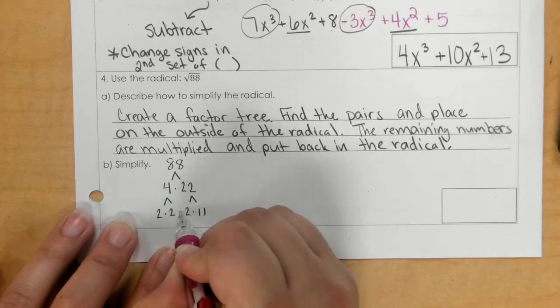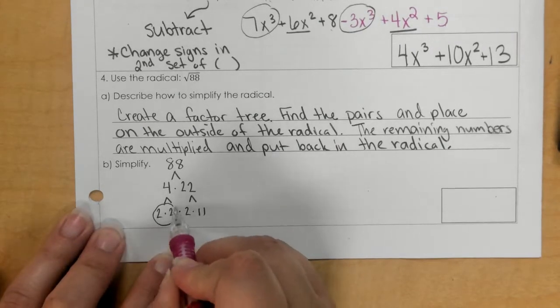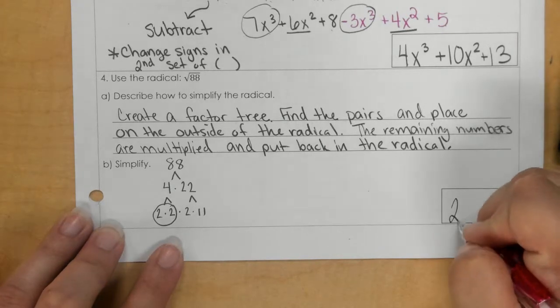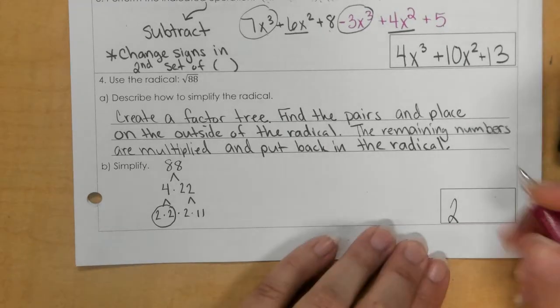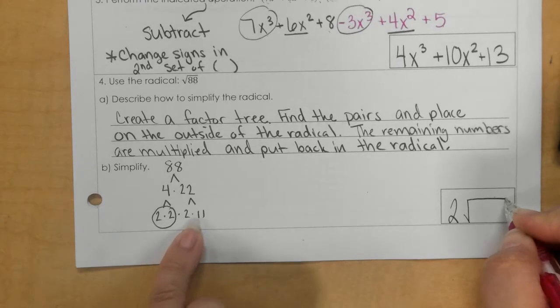We look at the end of our branches here and we have a pair of 2's. So that 2 goes on the outside of the radical, and then you multiply the leftover 2 times 11, the remaining numbers.